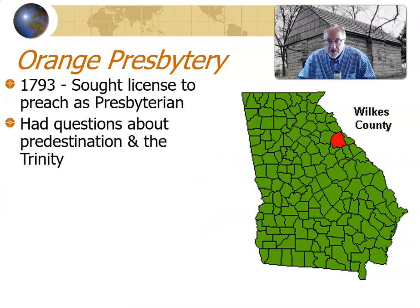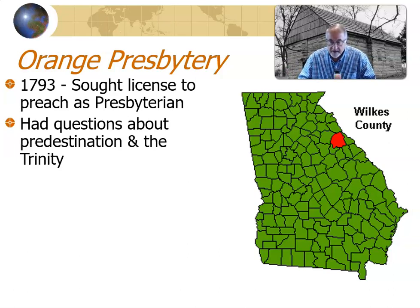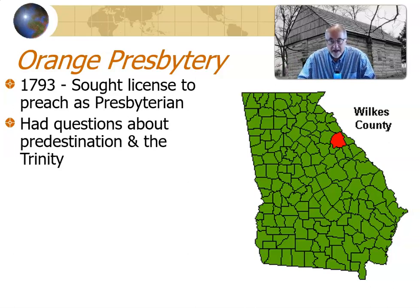Theologically, Barton W. Stone had a few questions about predestination — he has a lot of problems with Calvinism and the idea that some have been arbitrarily chosen to be among the elect and others have not. He also has questions about the Trinity, in part because the word Trinity does not appear in the Bible. Some have tried to call him a Unitarian, but he certainly believed in Jesus as divine. This was one of the criticisms leveled against him because of his questions about the Trinity.